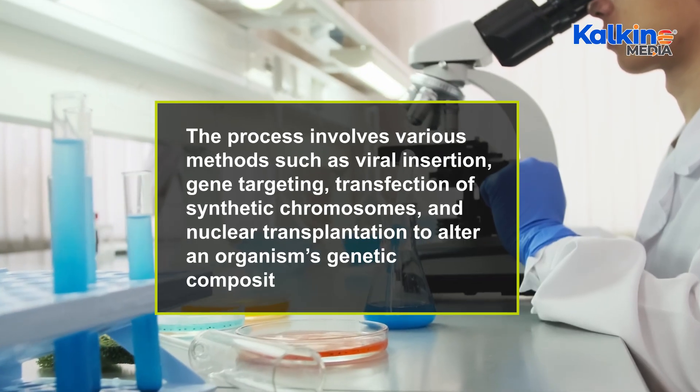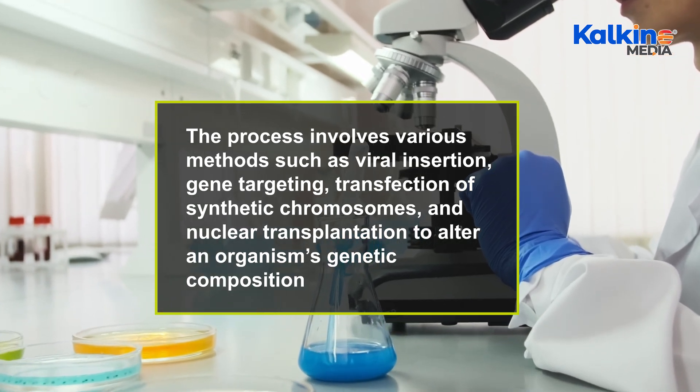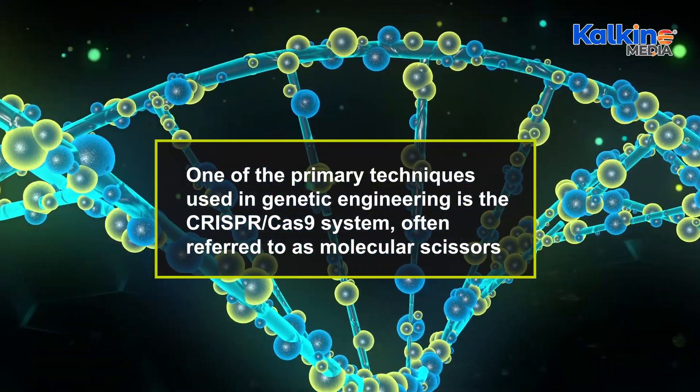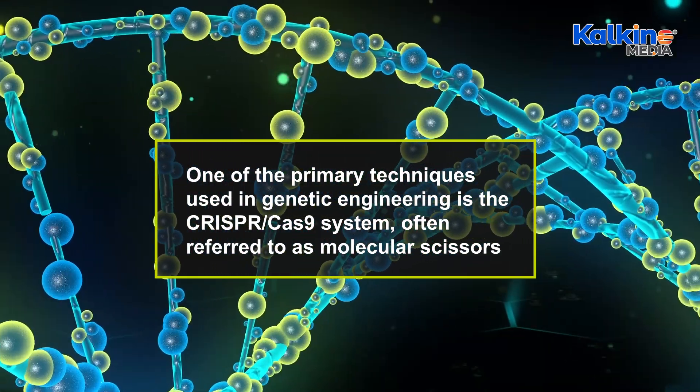The process involves various methods such as viral insertion, gene targeting, transfection of synthetic chromosomes, and nuclear transplantation to alter an organism's genetic composition. One of the primary techniques used in genetic engineering is the CRISPR-Cas9 system, often referred to as molecular scissors.